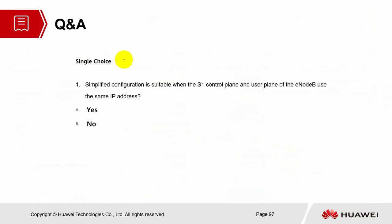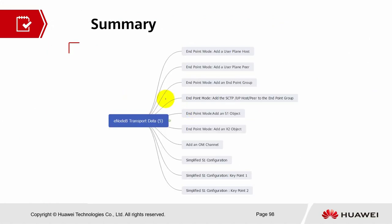Q&A: Simplified configuration is suitable when the S1 control plane and user plane of the eNodeB use the same IP address — yes, this statement is correct. Summary of this section on transport data: we have learned about endpoint mode, how to add a user plane host and peer, how to add an endpoint group, how to bind SCTP and user plane host/peer to the endpoint group, how to add S1 and X2 objects, how to add an OM channel, and the key points of simplified S1 configuration. Hope you enjoyed the session — thank you, bye.